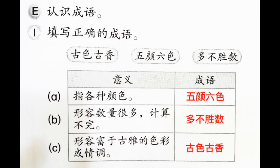Let's get started. 认识成语，填写正确的成语。五颜六色，是指各种颜色，多不胜数，形容数量很多，计算不完。古色古香，形容富于古雅的色彩或情调。